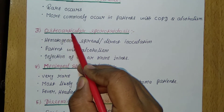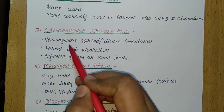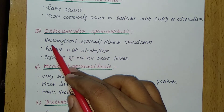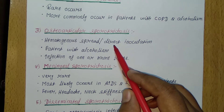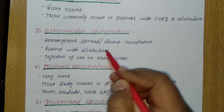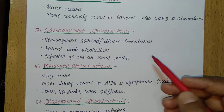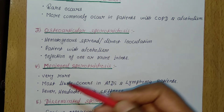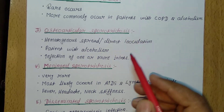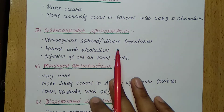The third type is osteoarticular Sporotrichosis. This form spreads hematogenously and may also spread by direct inoculation. It mostly occurs in patients with alcoholism. The infection may occur in one or more joints — 'osteo' meaning bone — so one or more joints can be affected.